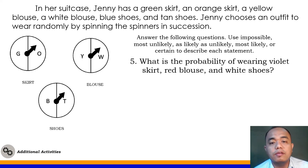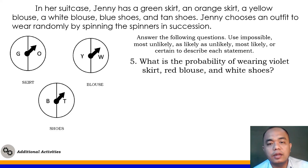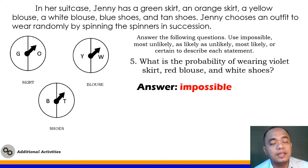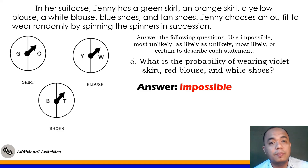Number 5: What is the probability of wearing a violet skirt, red blouse, and white shoes? Jenny has no violet skirt, no red blouse, and no white shoes — none of these are among her choices. So the answer is impossible.